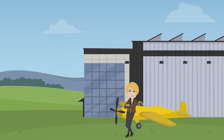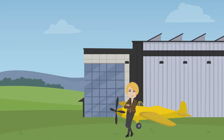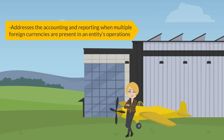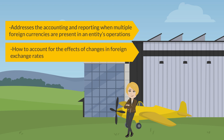IAS 21 addresses the accounting and reporting when multiple foreign currencies are present in an entity's operations and, specifically, how to account for the effects of changes in foreign exchange rates.